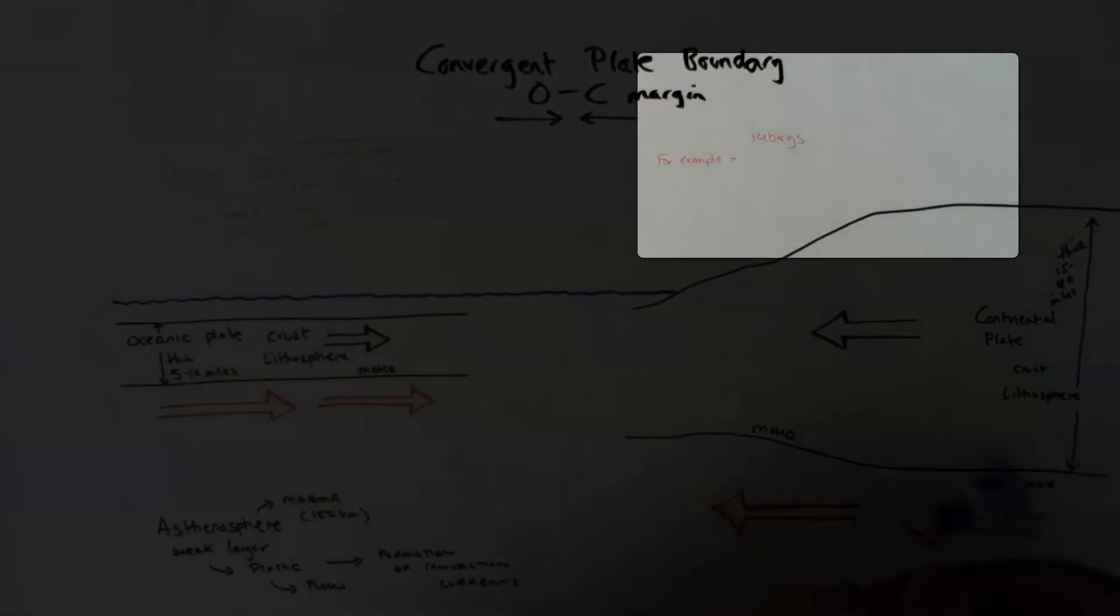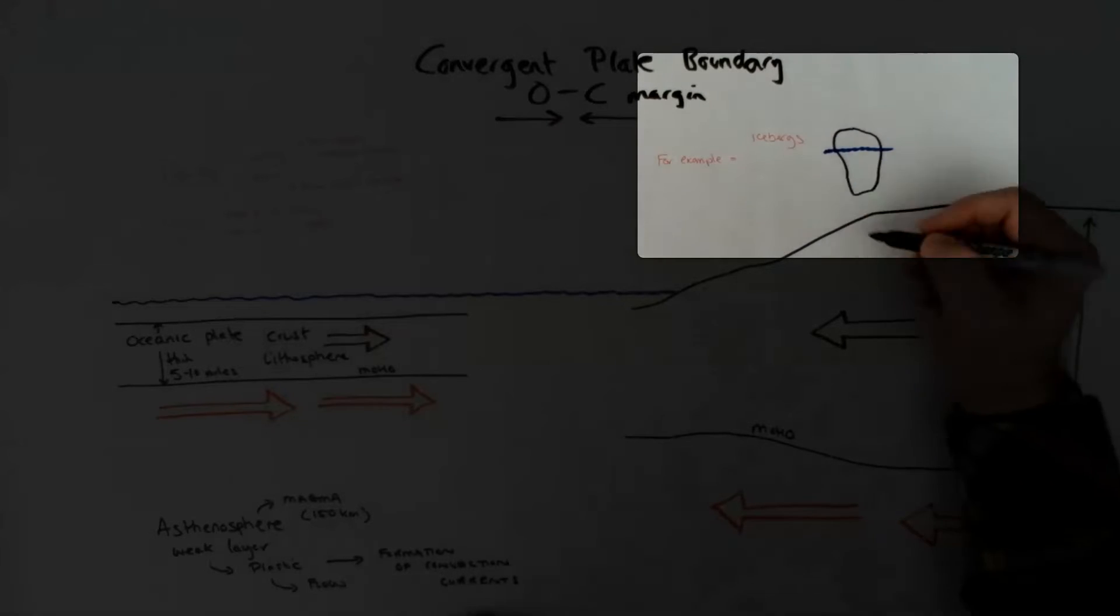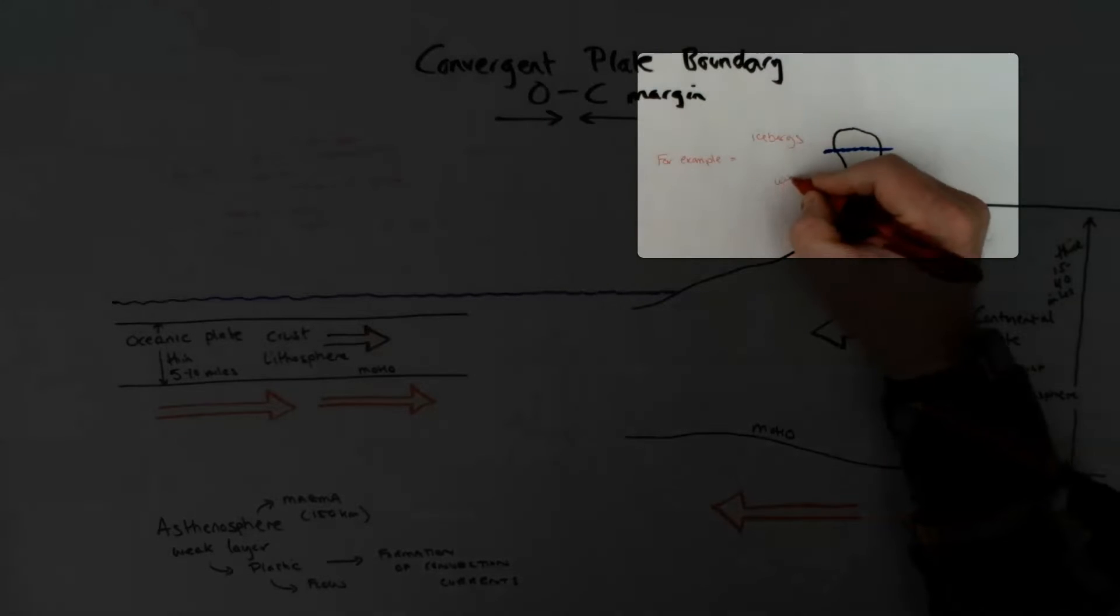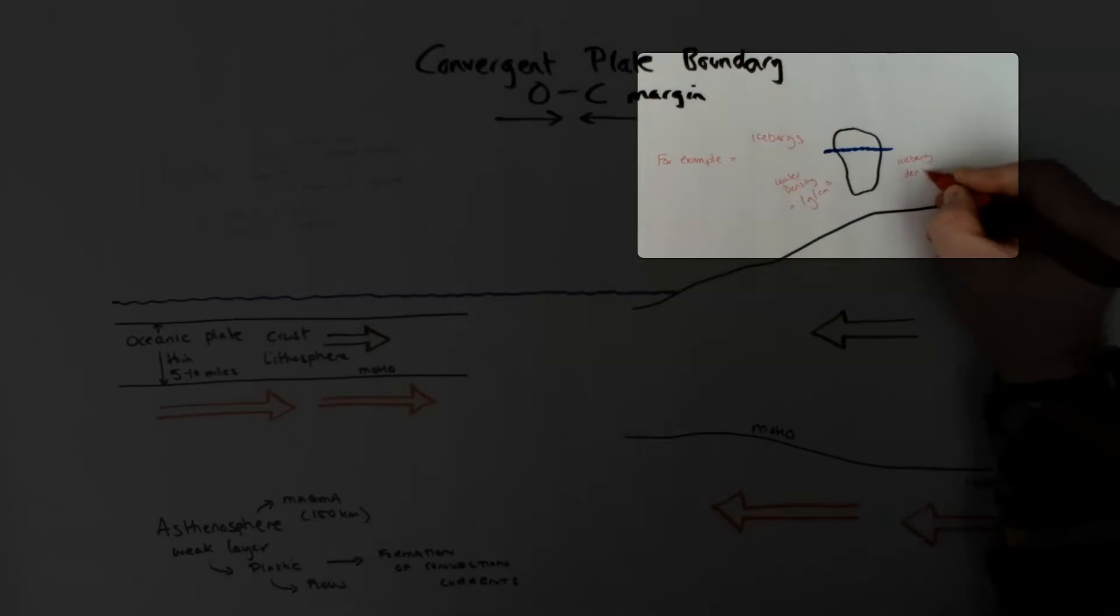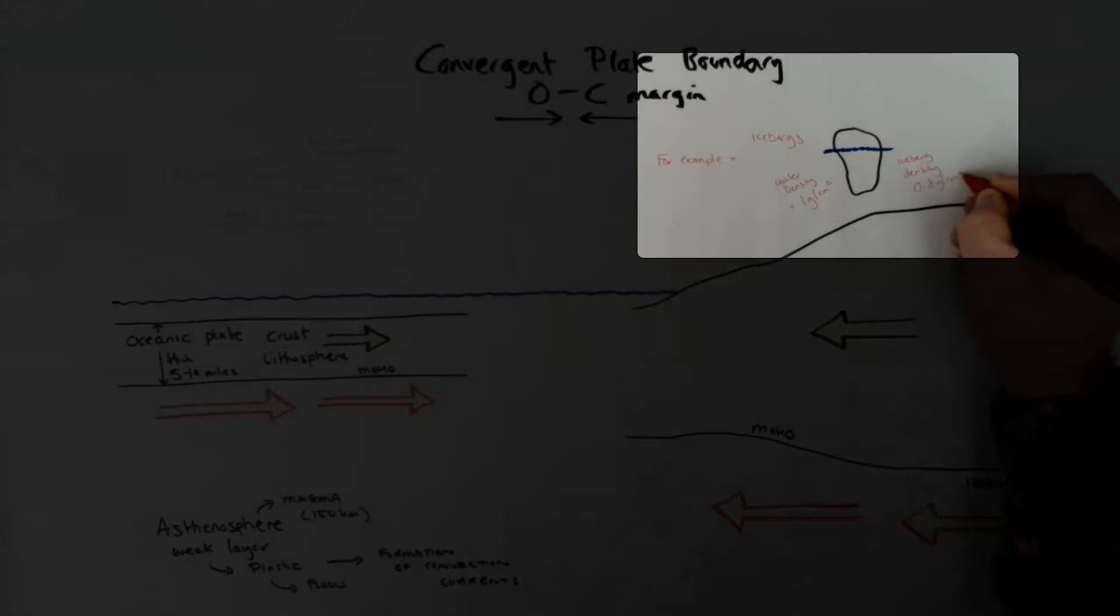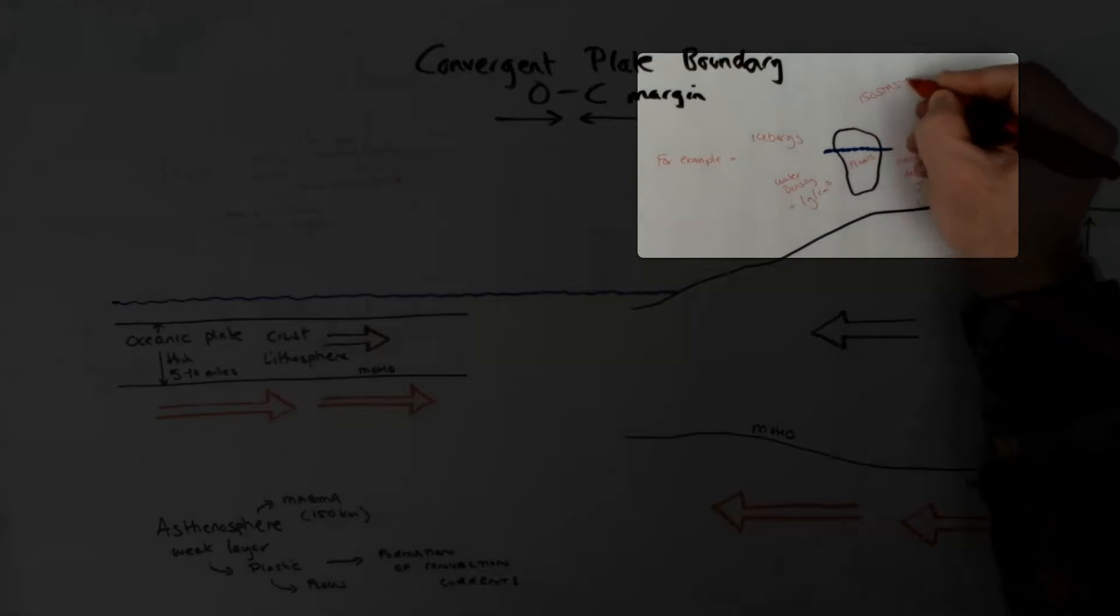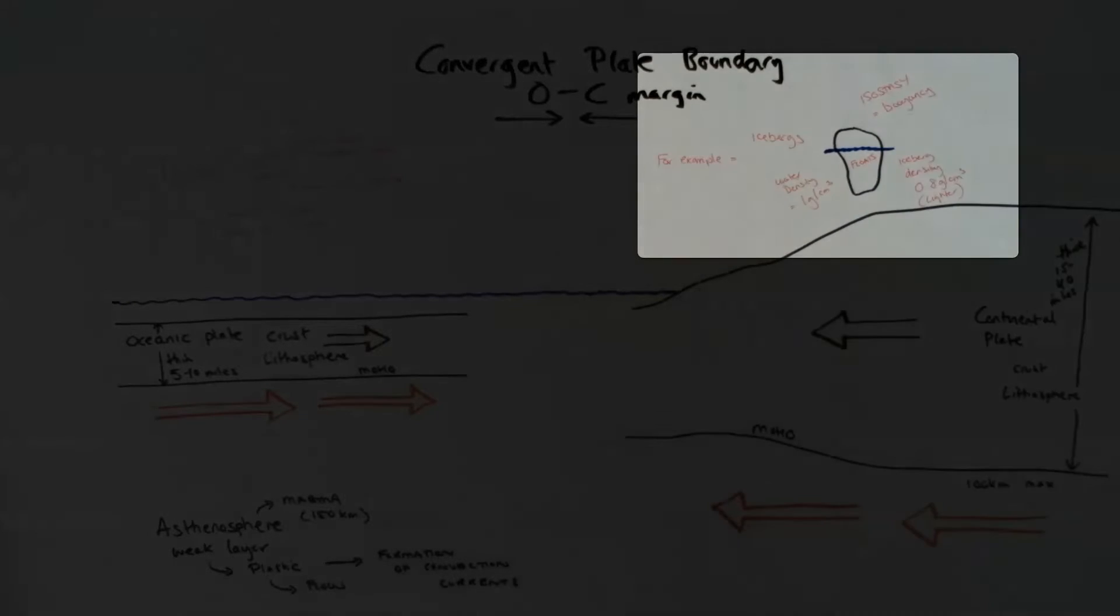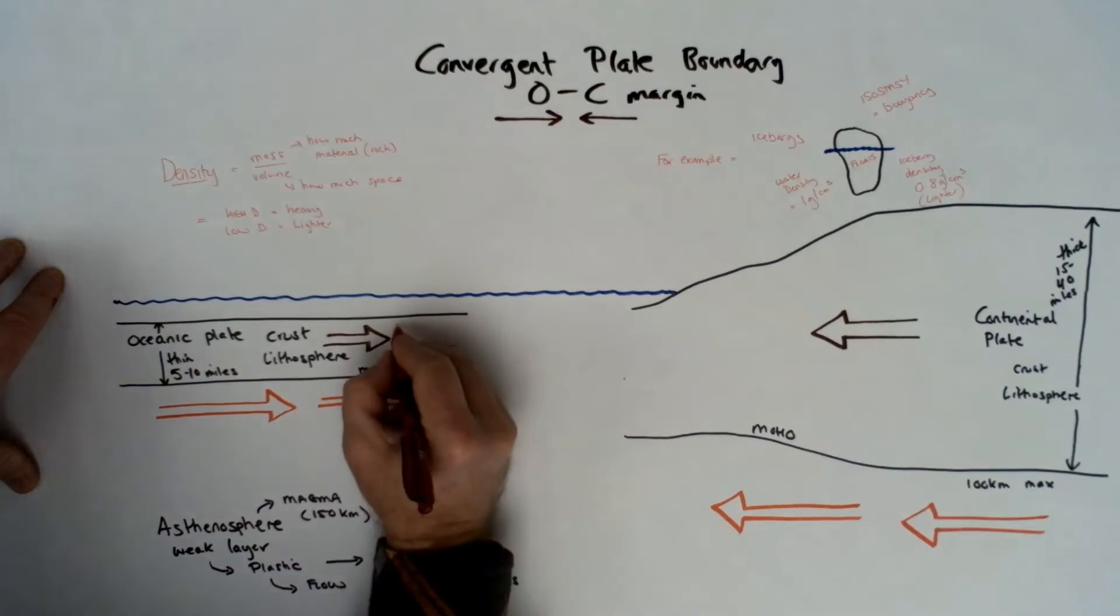An example of density I use in class is the iceberg in water. Water is one gram per centimeter cubed, which is density, and the iceberg because it floats is less - it's 0.8 or 0.85, and this allows the iceberg, even though it's a large piece of ice and weighs a lot of tonnage, it's gonna float because it is less dense than water. Great example to use in class. Density is really important.